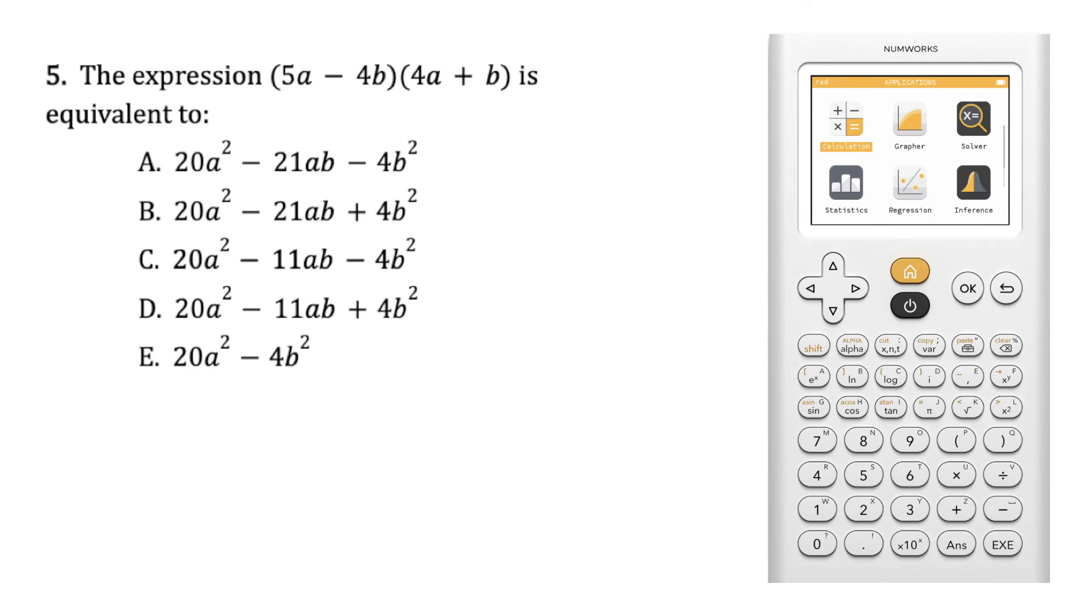To prepare for the ACT, let's look at question 5. Question 5 states, the expression the quantity of 5a minus 4b times the quantity of 4a plus b is equivalent to which of the following?